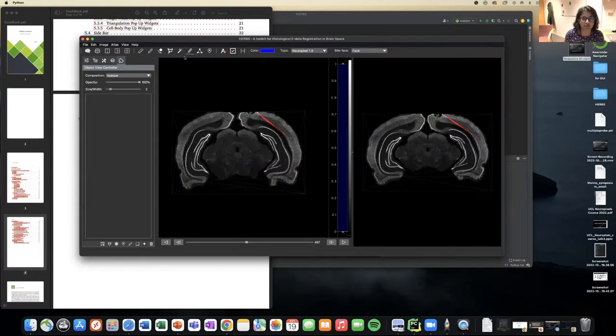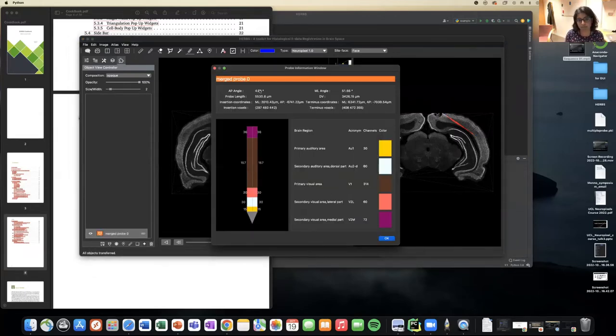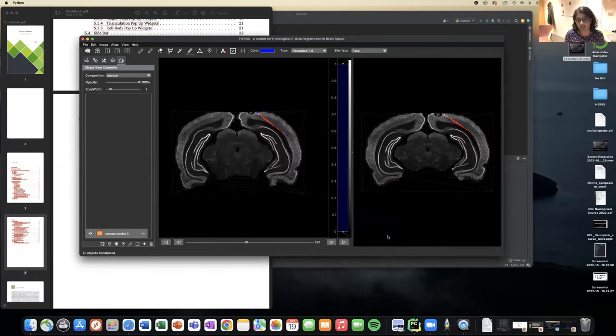And then go back to the probe maker that we saw during talk three, where I was showing you how to plan trajectories and use that on your histology—just two points, accept. And you have a merged probe that shows you the angle at which it was inserted, the length of probe that's inside the brain from the 2D histology that we've plugged in, and the regions that it has traveled and the estimated channels that it's recorded from.